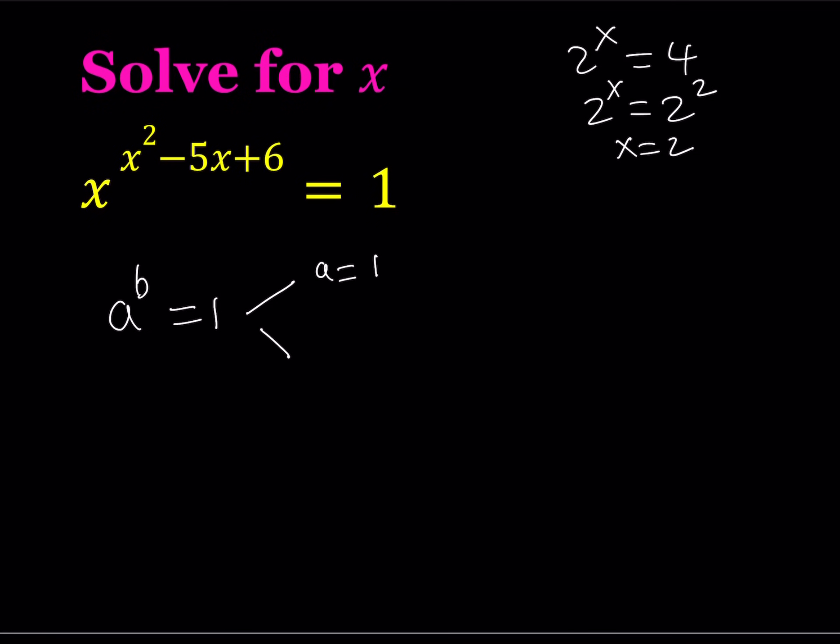Now another scenario that you could be getting is where a equals negative 1 because as you know if you square negative 1 for example you get a positive 1. If you raise it to the third power you get a negative 1. But if you raise it to the fourth power you get positive 1 again. So you're looking at an even power here. So if a is negative 1 and b is even, of course it has to be an even integer, then you also got a solution from here.